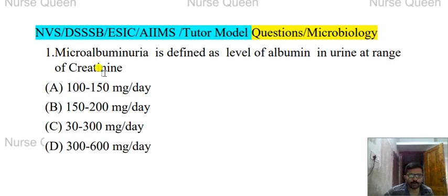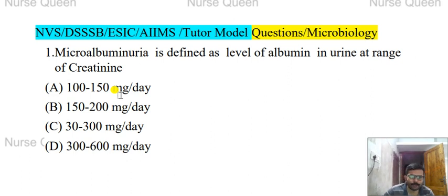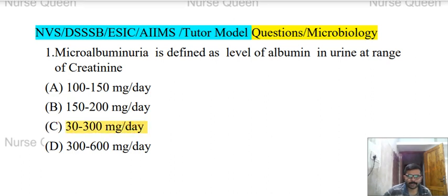First question: microalbuminuria is defined as level of albumin in urine at range of creatinine. Options: 100 to 150 mg per day, 150 to 200 mg per day, 30 to 300 mg per day, or 300 to 600 mg per day. Correct answer: 30 to 300 mg per day.